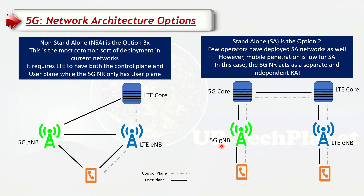In standalone, 5G is a separate RAT (radio access technology). If a user goes out of 5G coverage they will move to LTE, and if a user on LTE is within 5G coverage they will move towards 5G since 5G has higher priority. If voice is not supported on 5G, a user needing to make a voice call will do an EPS fallback and go to LTE to make a VoLTE call.